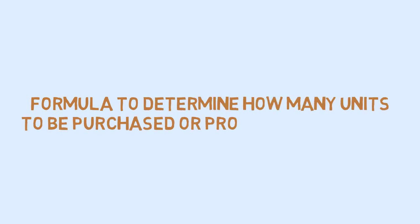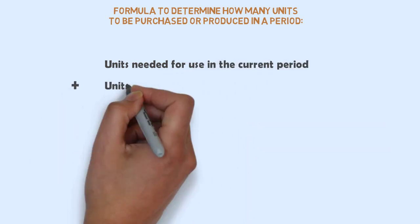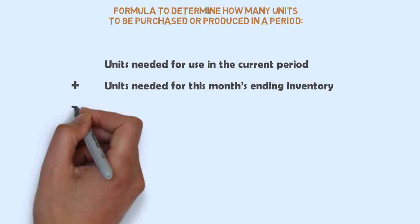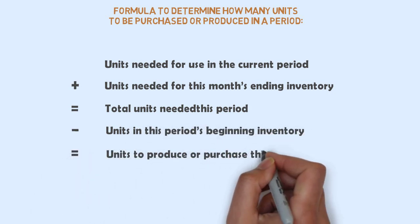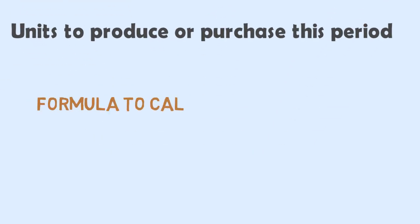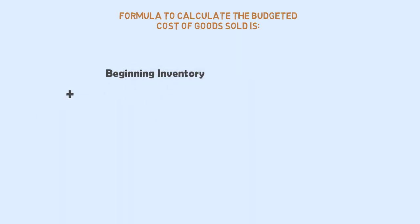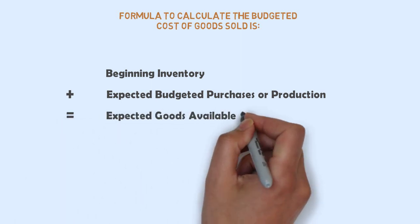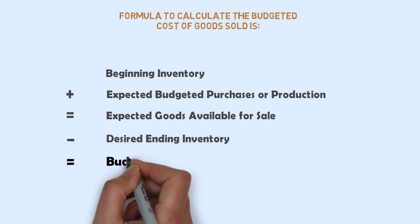Important formulas. The formula to determine how many units to be produced or purchased in a period is: units needed for use in the current period, plus units needed for this month's ending inventory, equals total units needed for this period, minus units in this period's beginning inventory, equals units to produce or purchase this period. The formula to calculate the budgeted cost of goods sold is: beginning inventory plus expected budgeted purchases or production equals expected goods available for sale, minus desired ending inventory equals budgeted cost of goods sold.